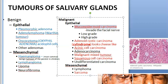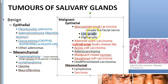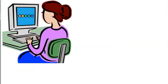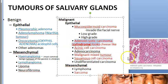Mucoepidermoid carcinoma contains mucin-producing cells and squamous cells. It can be low grade or high grade — low grade has better prognosis and may be treated with superficial parotidectomy, while high grade requires total parotidectomy and the facial nerve may have to be sacrificed.